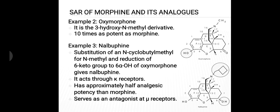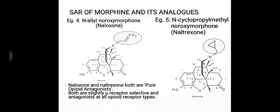The fourth example is N-allyl nor-oxymorphone, that is naloxone. The key structural feature is the presence of an allyl moiety instead of a methyl moiety at the nitrogen atom.